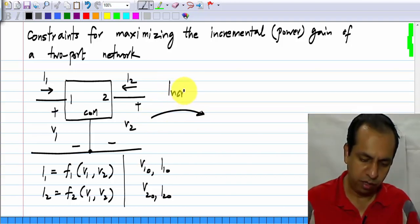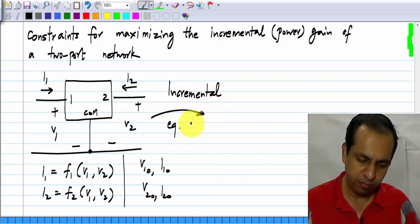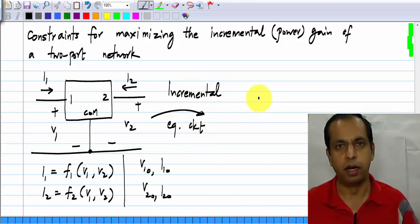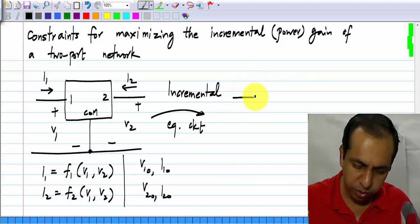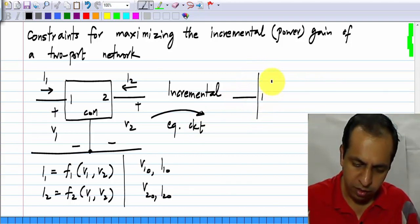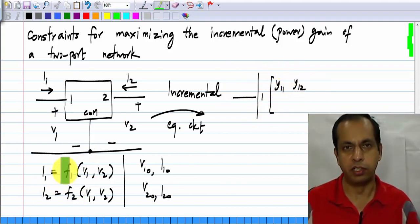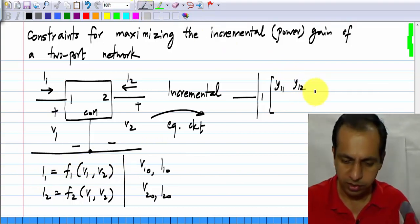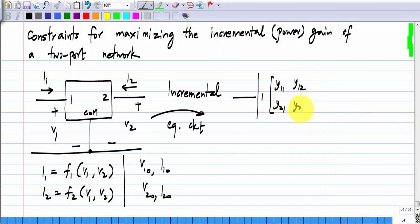If we take the incremental equivalent circuit around the operating point, what do we have? We know that it is going to be a linear two port. And because we have here currents as functions of voltages, in this case we will have Y parameter description.